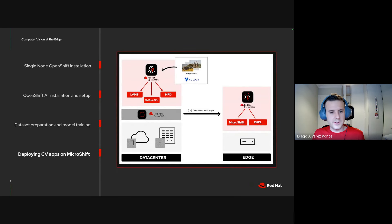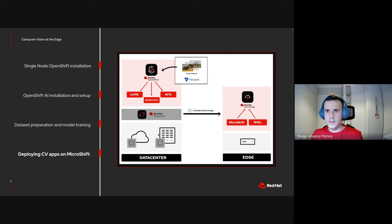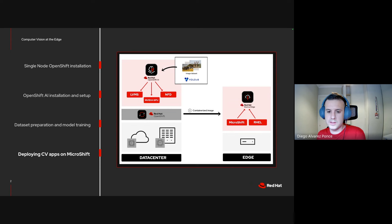Before starting, I'd like to do a recap. We have two different elements in our environment: the data center, which we moved closer to the edge because there were some advantages when training models at the edge, and the edge device itself where we run the application. On the data center side, we deployed Single Node OpenShift, because when moving everything to the edge we have resource constraints, so we go for a smaller footprint. Single Node OpenShift provides the same experience as a full cluster, apart from not having high availability.